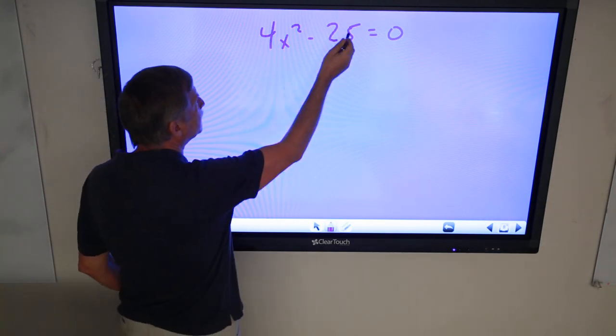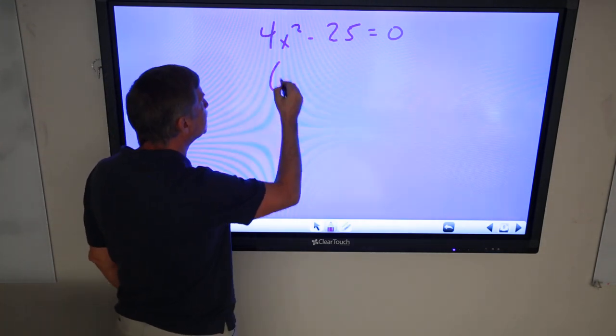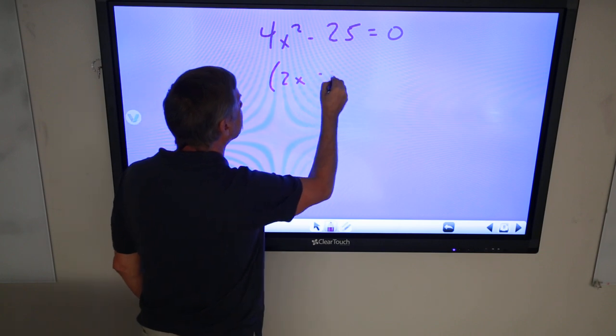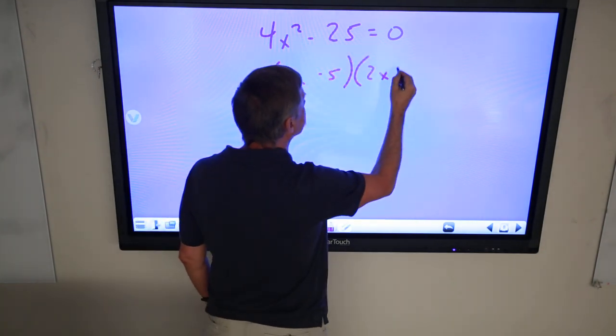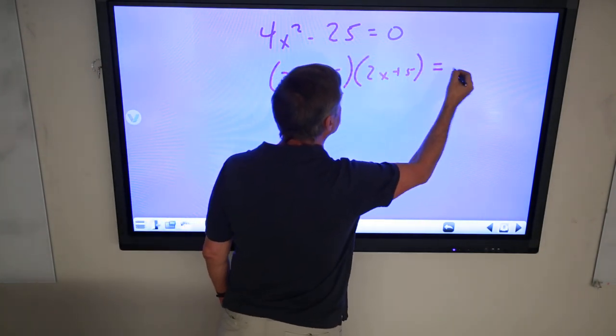Perfect square, perfect square, difference of perfect squares. 2x minus 5, 2x plus 5, and then equal 0.